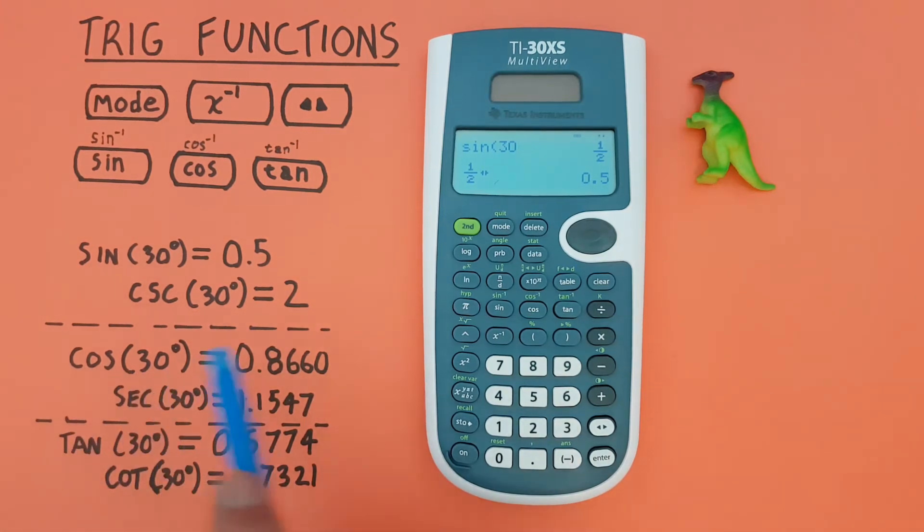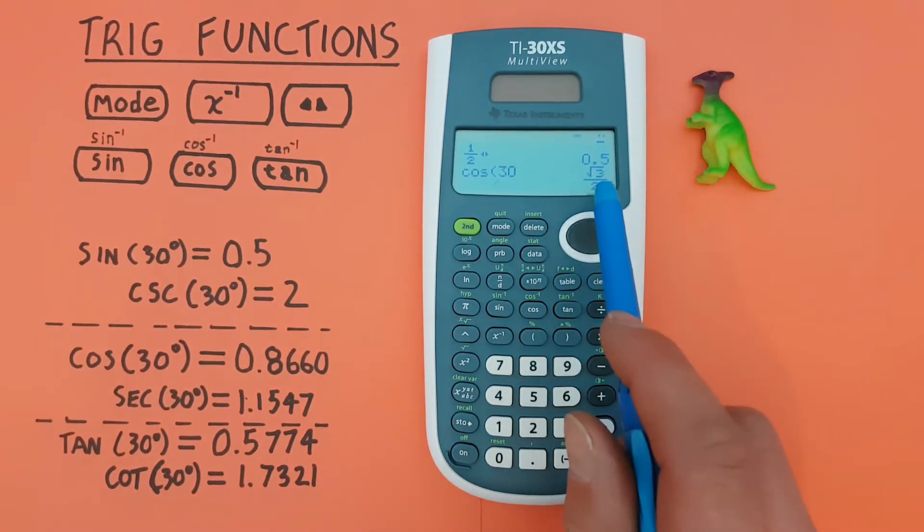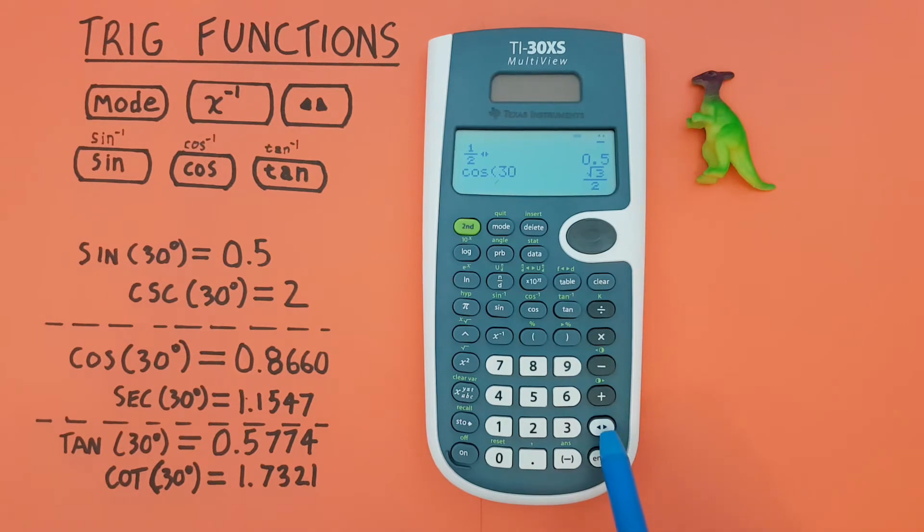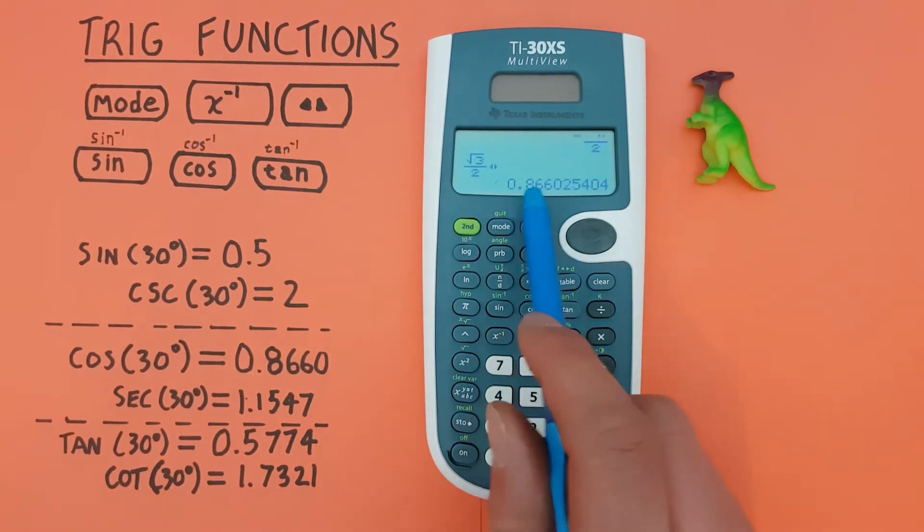cos, we can do the same way, cos 30, enter. Again, this gives us a fraction, which we can convert to a decimal with the toggle key. There we go, 0.8660, etc.